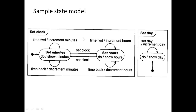This all comes together in a sample state model. For a set clock example, you are setting the minutes, the hours, and the day — all happening concurrently. The filled circle indicates the start state. This sample demonstrates synchronization of concurrent activities in a practical context.